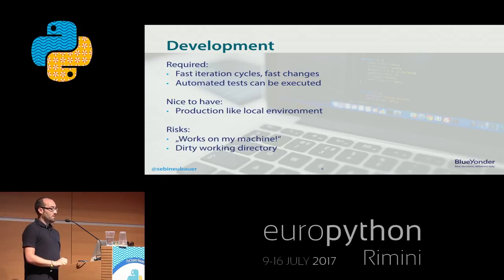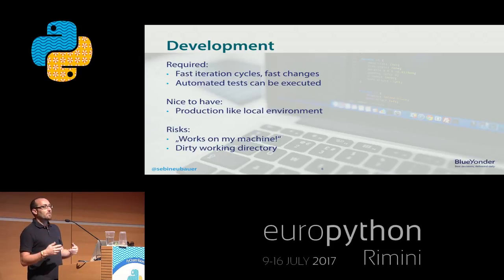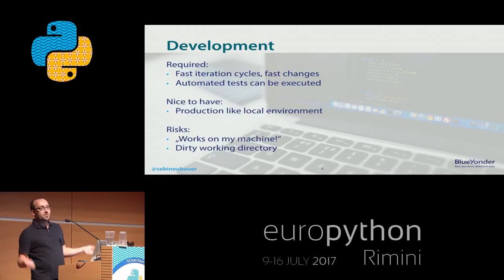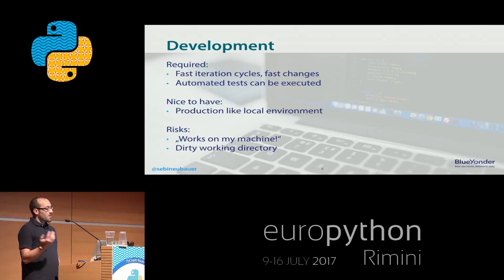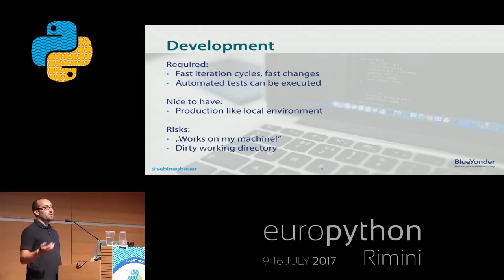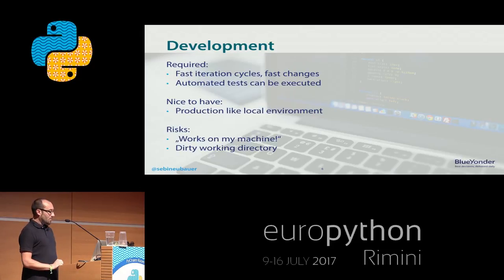A nice-to-have is some kind of emulation of the production system — maybe we can start our Flask server, or have a small Postgres running like in production. But this is already a nice-to-have. For some projects, it will just not be possible to really have a production-like system on your laptop. And we also have some risks here.